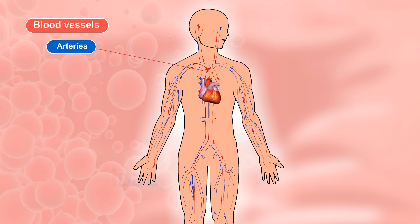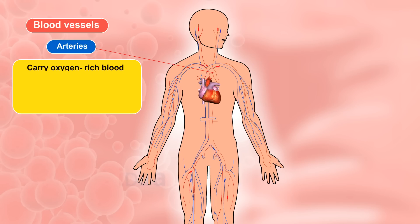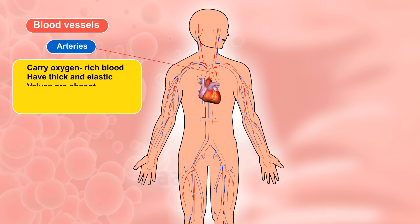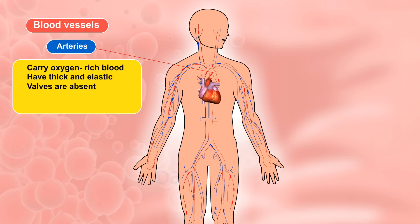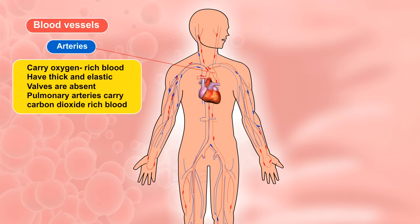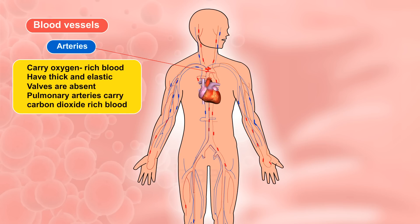Arteries. Arteries carry oxygen-rich blood from the heart to various parts of the body. They have thick and elastic walls, as the blood flowing through arteries has high pressure. Valves are absent. Pulmonary arteries carry carbon dioxide-rich blood from the heart to the lungs.